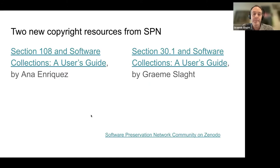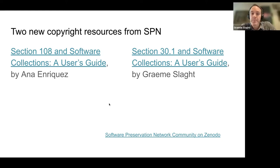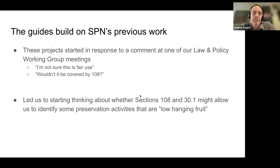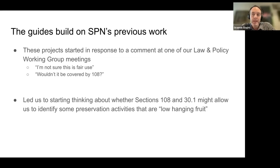The two new resources we're discussing today are the Section 108 and the Section 30.1 guides for software collections. You'll find them in the Software Preservation Network community on Zenodo and also linked on the SPN website. These guides build on SPN's previous work and were group efforts — you'll find acknowledgements at the start of each document.